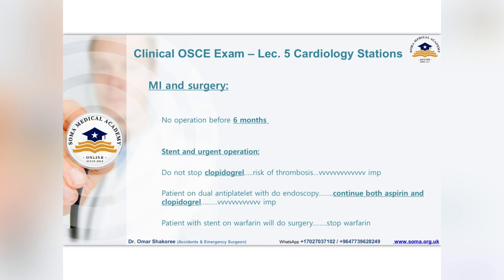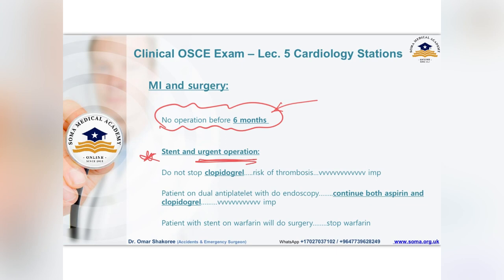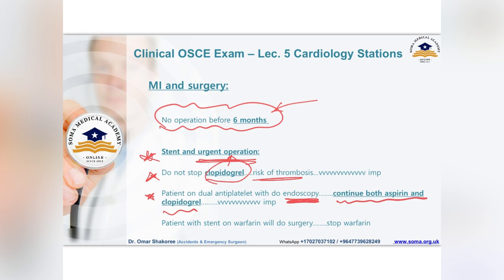If asked about surgery in a post-MI patient who has undergone stenting, the ideal is no elective operation before six months. If the patient has a stent but needs urgent surgery, do not stop clopidogrel — it should never be stopped before surgery due to the risk of thrombosis. If a patient on dual antiplatelet therapy needs endoscopy, continue both aspirin and clopidogrel, as there is minimal bleeding risk with endoscopy.